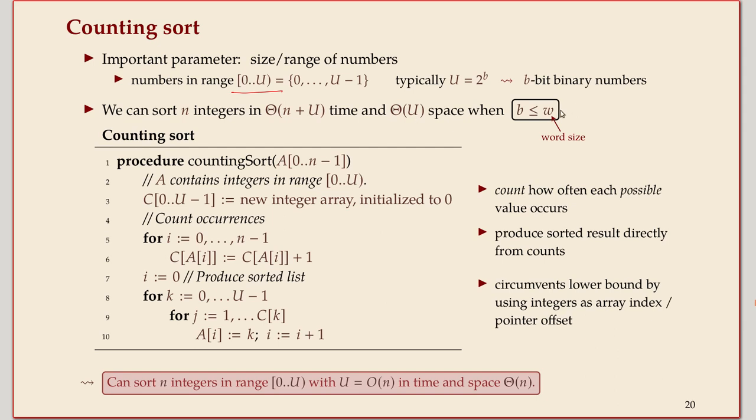But suppose it's small enough so that we can afford u memory cells on our machine. And in the theory land, where we work on this word RAM model, we'll just assume we have enough memory because the memory is actually unbounded.